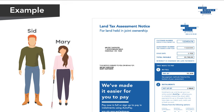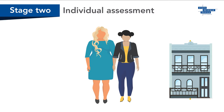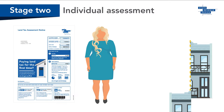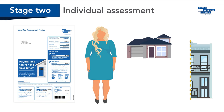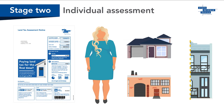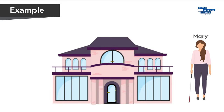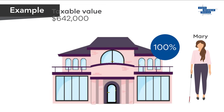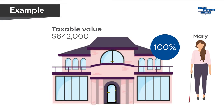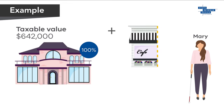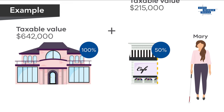They are jointly liable for this amount. In stage two, we assess each member of the joint ownership individually for all of their interests in taxable land. This includes any land they own by themselves, jointly with others, or as a notified unit holder or nominated beneficiary of certain trusts. In our example, Mary also owns another property individually with a site value of $642,000. Mary is assessed on their individual interest in land plus their proportional share of the property held jointly with Sid.